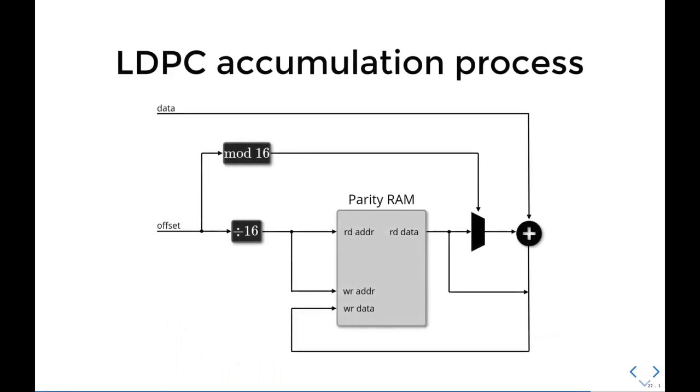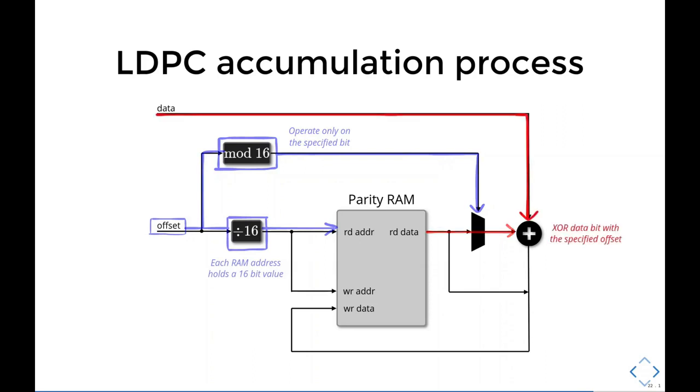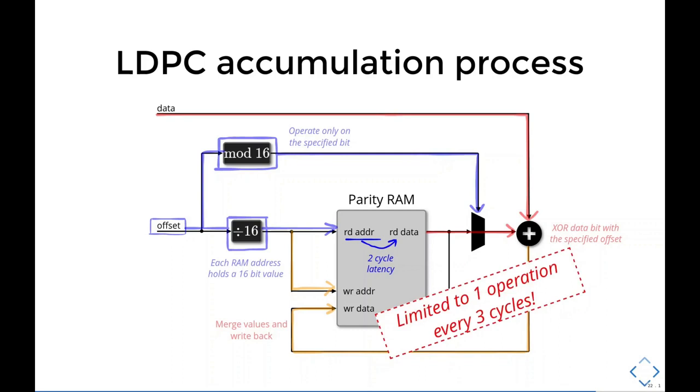The accumulation process is the heart of the LDPC encoding. This block connects directly to the input synchronizer. Here, offsets are used to read the parity RAM. Because each RAM address holds a 16-bit value, we divide this offset by 16. The remainder of the division is used to operate only on the specified bit of the parity RAM read data. We then XOR the input data bit with the specified bit of data from the RAM and write the results back to the RAM itself. Block RAMs have an intrinsic two-cycle latency between reading an address and data showing up in the read data port. And because we are using the same address for both read and write, we are effectively limited to one operation every three cycles.